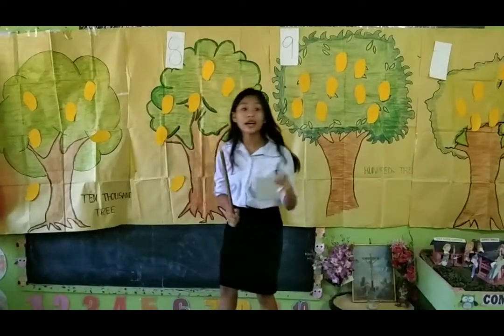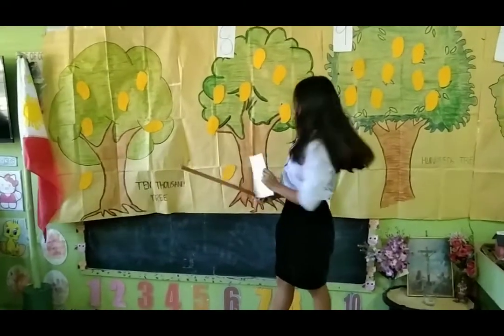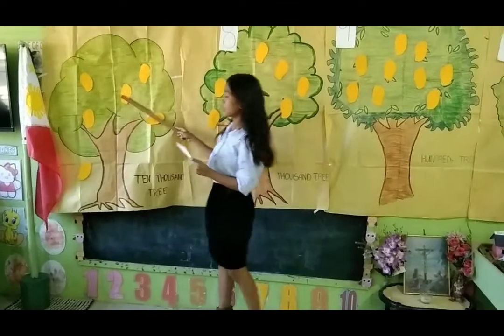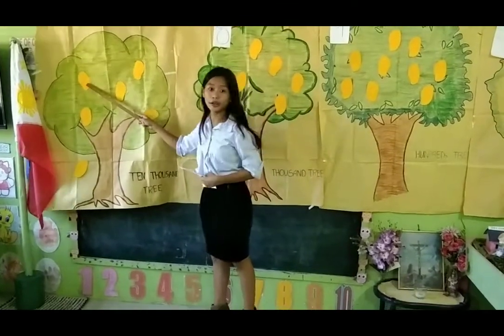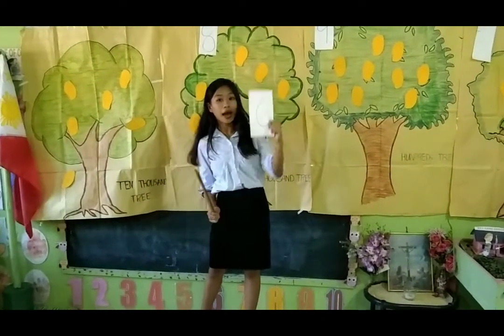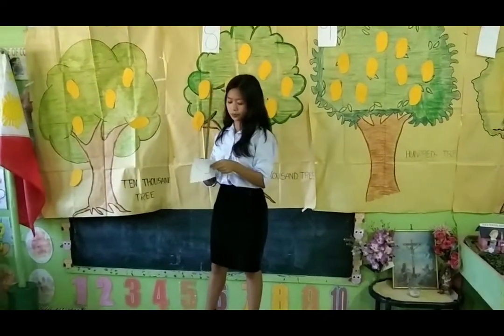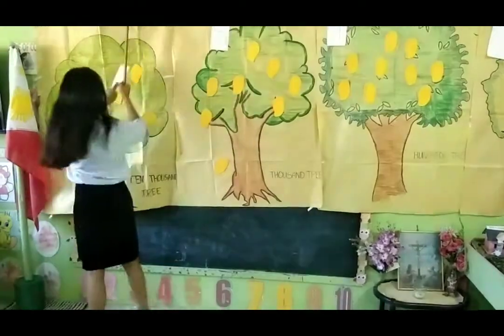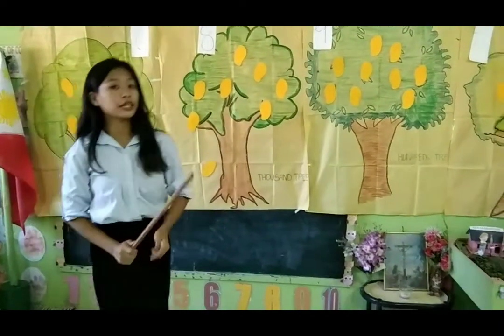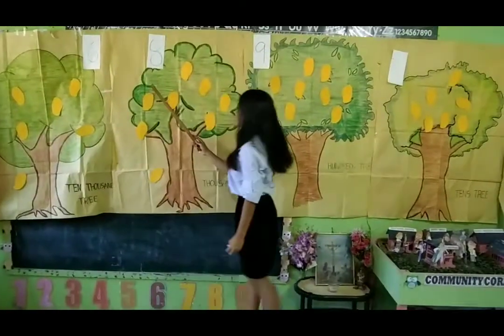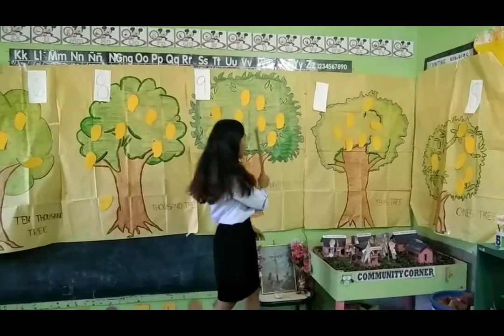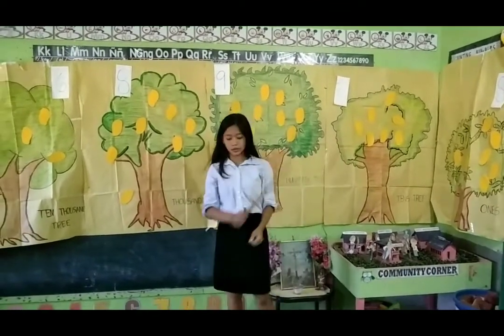Then, the last tree — the ten thousands tree. Let's count: 1, 2, 3, 4, 5, 6. The ten thousands tree has 6 fruits. So, the combined number is 68,978.